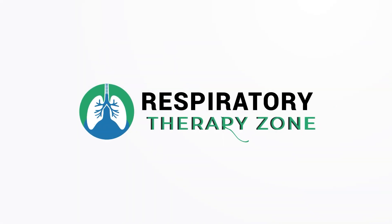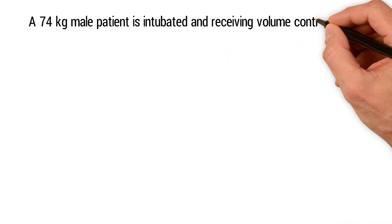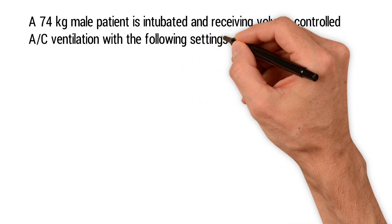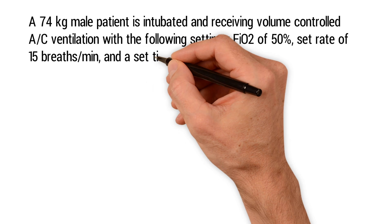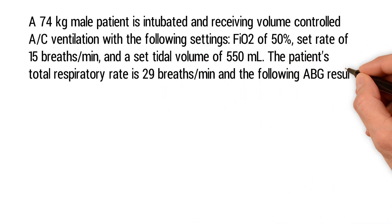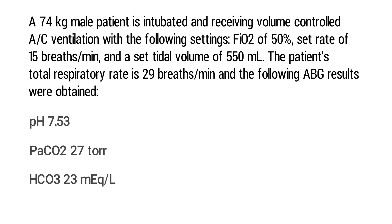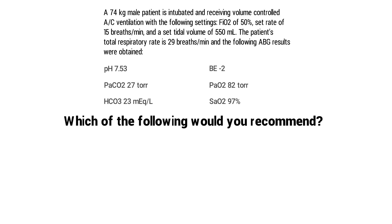A 74 kilogram male patient is intubated and receiving volume controlled assist controlled ventilation with the following settings: an FiO2 of 50%, a set rate of 15 breaths per minute, and a set tidal volume of 550 milliliters. The patient's total respiratory rate is 29 breaths per minute and the following ABG results were obtained: pH of 7.53, PaCO2 of 27, bicarb of 23, base excess of negative 2, a PaO2 of 82, and an SaO2 of 97.